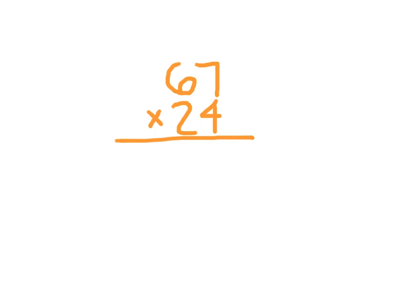We start with 4 times 7 which is 28. Place the 8 and regroup the 2. Then 4 times 6 is 24, plus 2 is 26. Remember to cross out the 2 regroup.